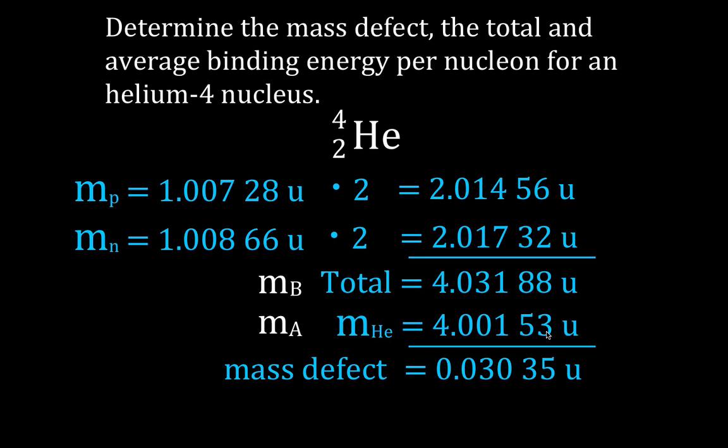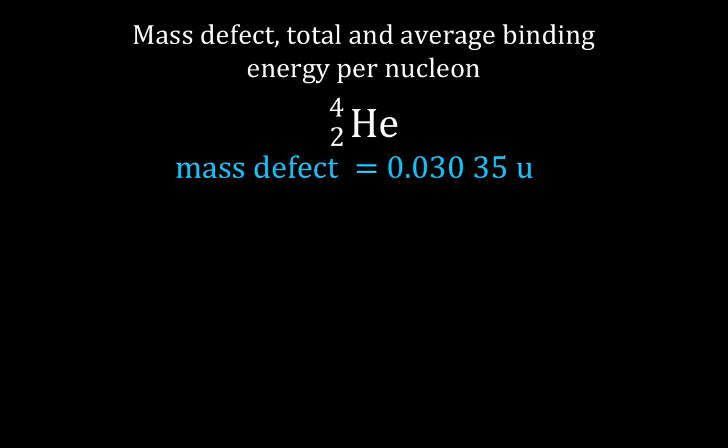The mass defect — the difference in the mass of the individual constituents and the helium nucleus — in this case is 0.03035 atomic mass units. And we're going to convert that mass into energy using Einstein's equation, which we're going to do on the next slide.